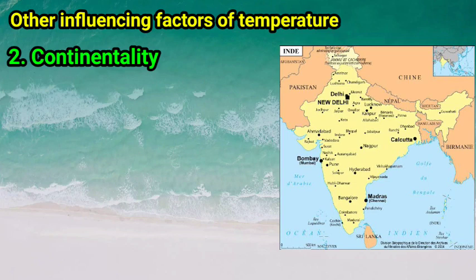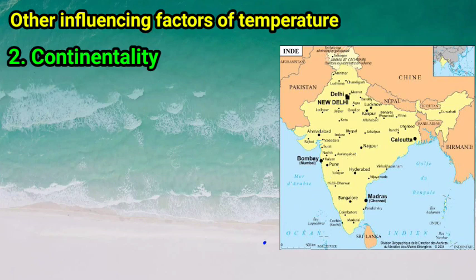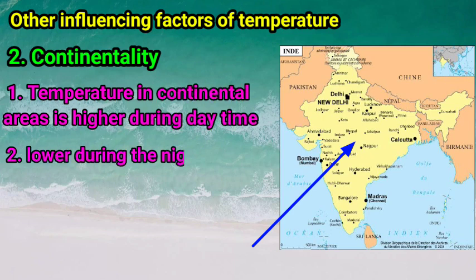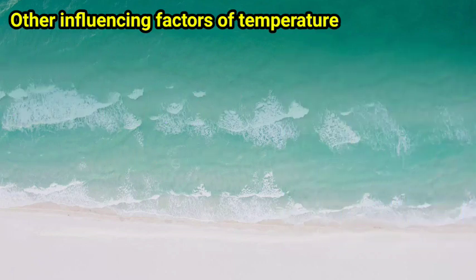Number two: continentality. Continental areas are regions far away from the sea. As we move away from the sea, the moisture content in the air gradually decreases and the climate becomes dry. Land gets heated faster and cools rapidly. Therefore, the temperature in continental areas is higher during the daytime and lower at night time.